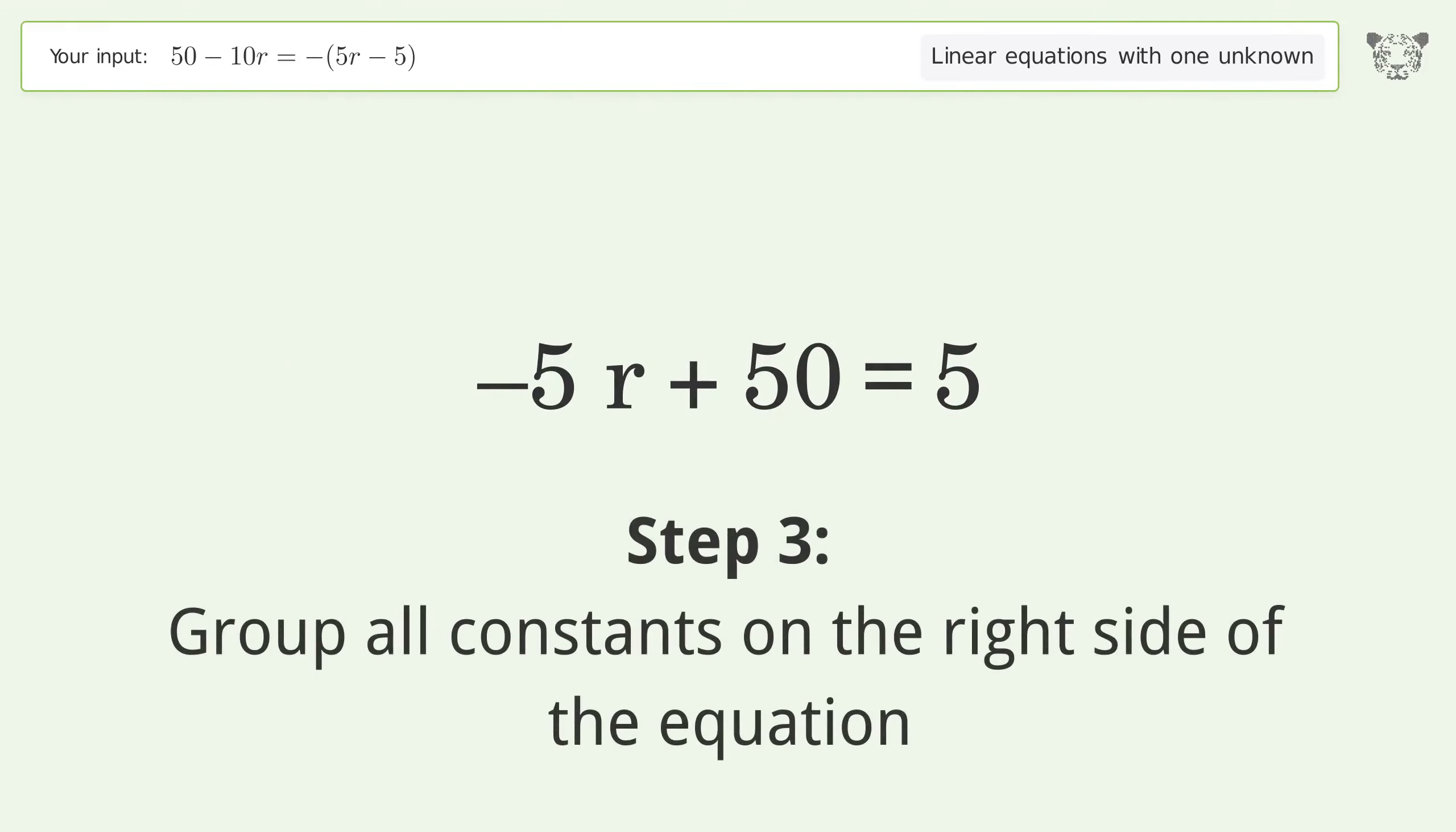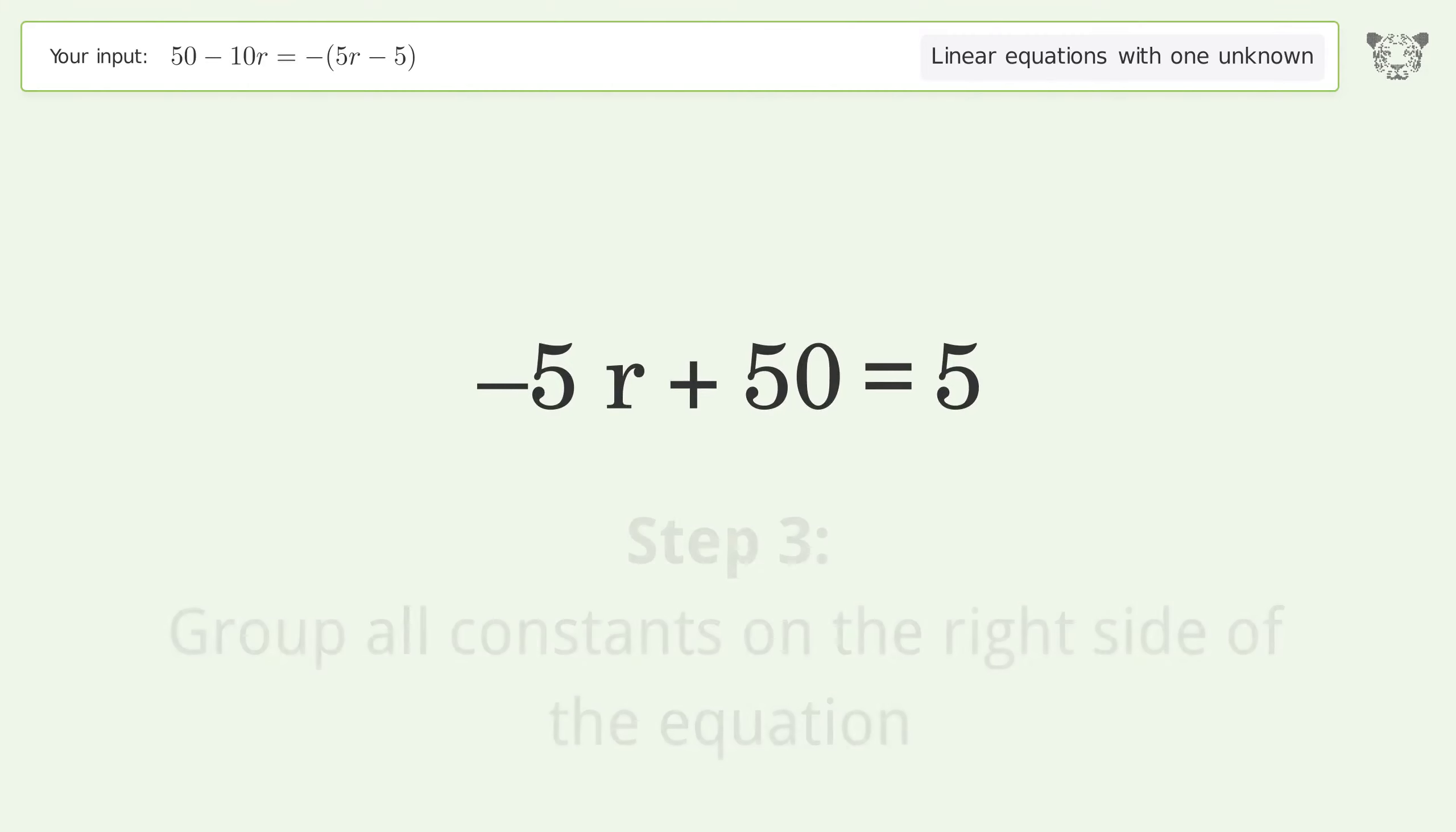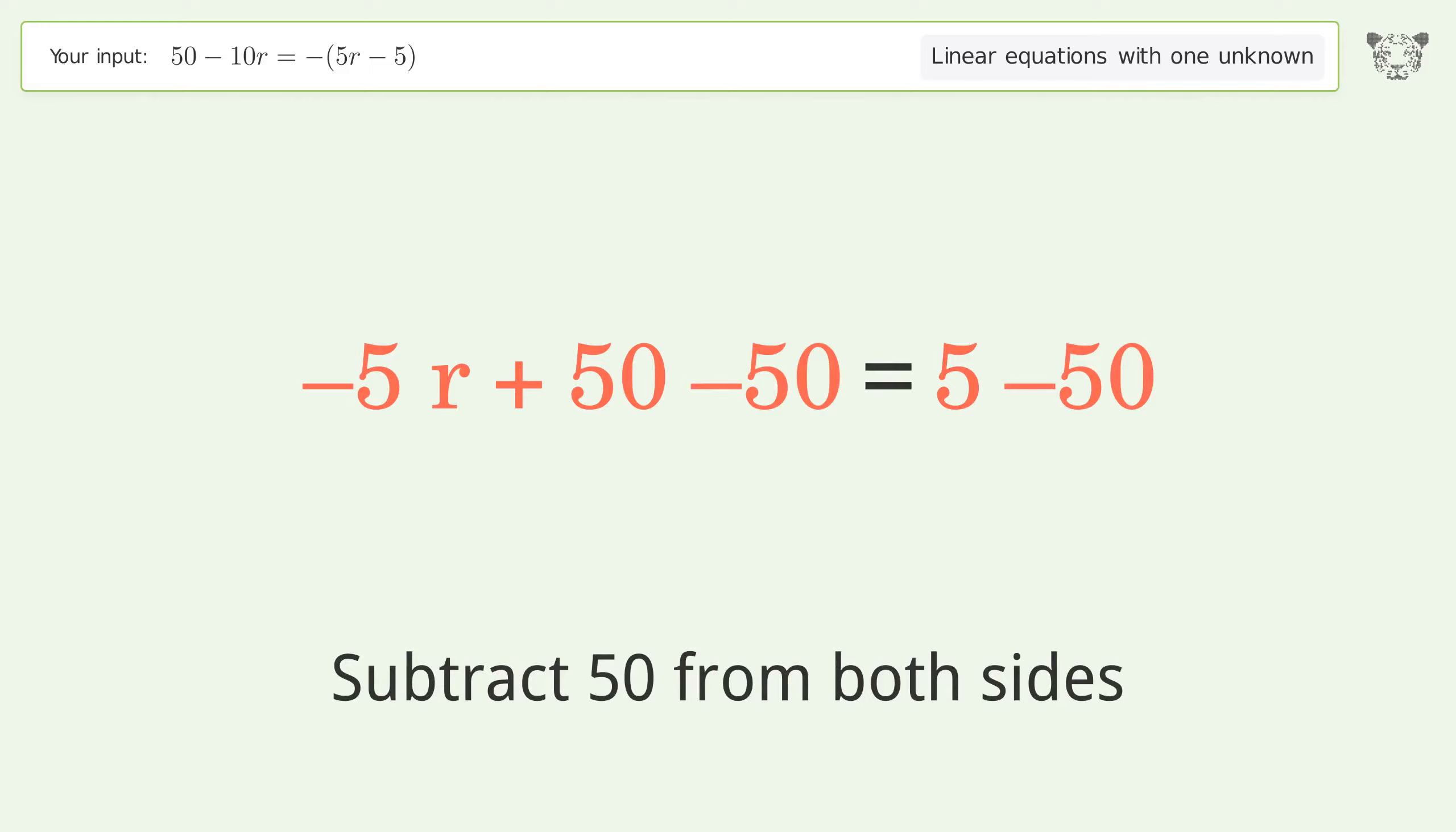Group all constants on the right side of the equation. Subtract 50 from both sides. Simplify the arithmetic.